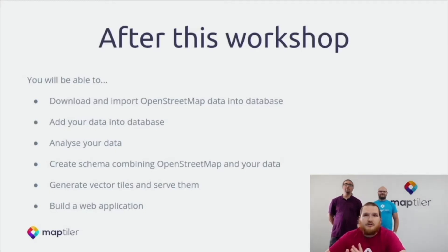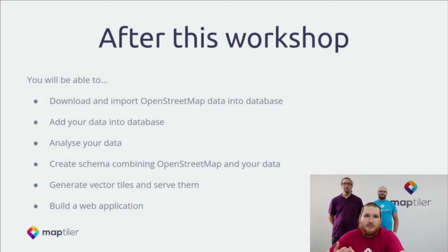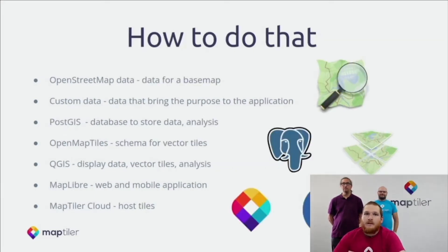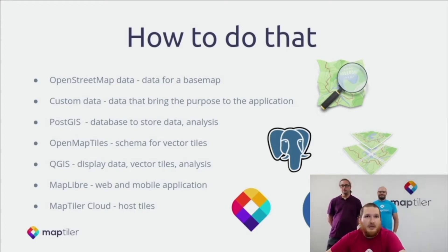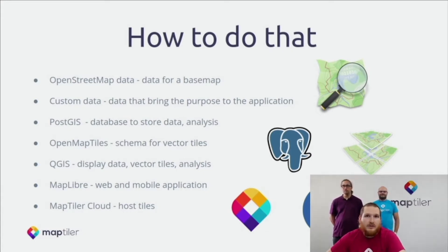After this workshop you will be able to use OpenStreetMap data for your base map. You will be able to analyze your data in GeoJSON or shapefile and create vector tiles with both OSM and your data. We will show you how to serve the tiles, how to add style to your map, and how to use this map in your web application. There are several open source projects that will help us: PostGIS as a database, OpenMapTiles to define the schema of the vector tiles, QGIS to display and analyze our data, and MapLibre and MapTiler Cloud to finally get that application.